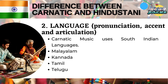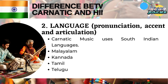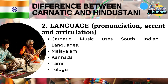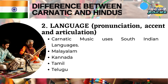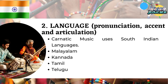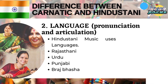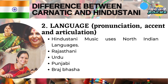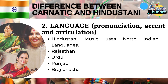Number 2, Language, pronunciation, accent, and articulation. Carnatic music uses South Indian languages including Malayalam, Kannada, Tamil, and Telugu. While Hindustani music uses North Indian languages including Rajasthani, Urdu, Punjabi, and Brajbhasha.